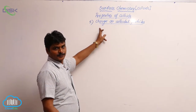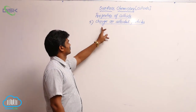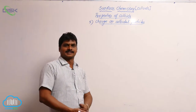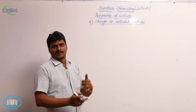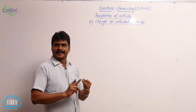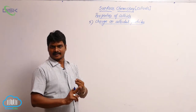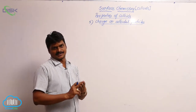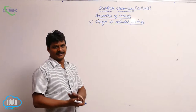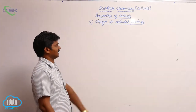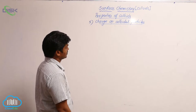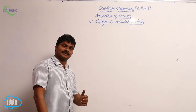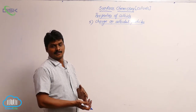Let's see the next property of colloids: charge on colloidal particles. Till now we have discussed colligative properties, Tyndall effect, color of colloids, and Brownian movement — so four properties already discussed. The fifth property of colloidal solution is charge on colloidal particles.